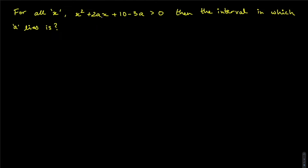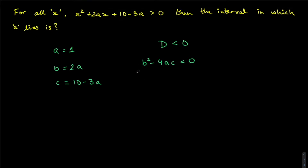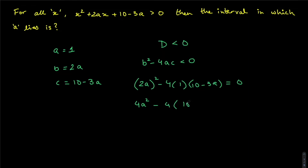Here a equals 1, b equals 2a, and c equals 10 minus 3a. We need b squared minus 4ac to be less than zero. Substituting: (2a) squared minus 4 times 1 times (10 minus 3a) less than zero, which gives 4a squared minus 4(10 minus 3a) less than zero.